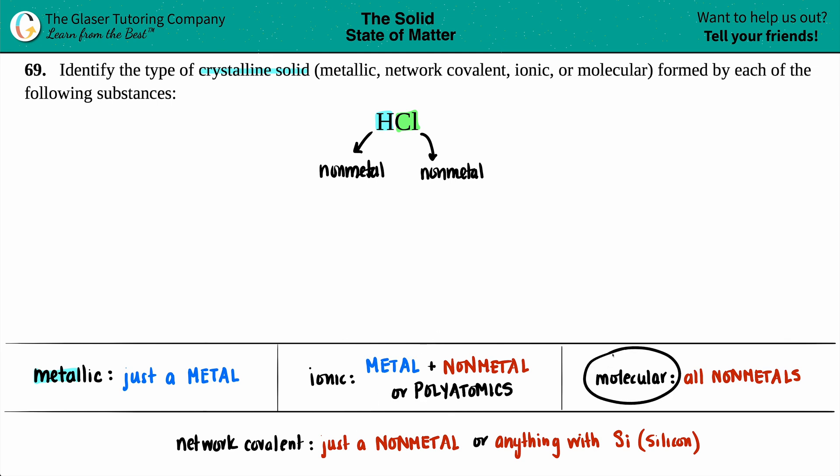Is it a molecular crystalline solid? Well, molecular crystalline solid comes from molecules, and molecules are saved for covalent compounds. That's why these are all non-metals. And I have H, which is a non-metal, I have Cl, which is a non-metal. These are all non-metals. So I think we got the answer. This HCl would be a molecular crystalline solid.